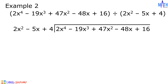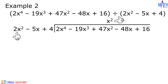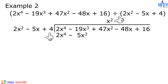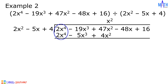2x raised to the 4th divided by 2x squared is equal to x squared. Let us multiply x squared by 2x squared minus 5x plus 4. x squared times 2x squared equals 2x raised to the 4th. x squared times negative 5x equals negative 5x cubed. x squared times 4 equals 4x squared. Let us subtract: 2x raised to the 4th minus 2x raised to the 4th equals 0.